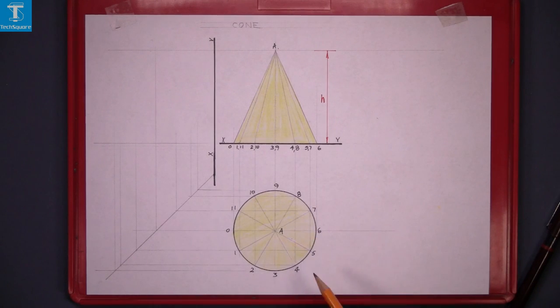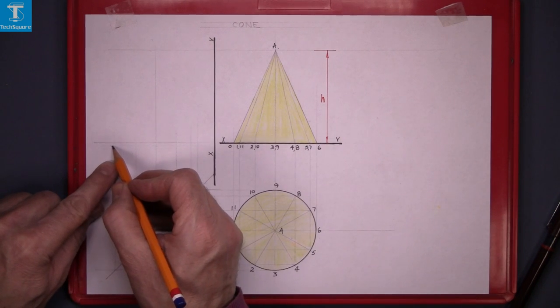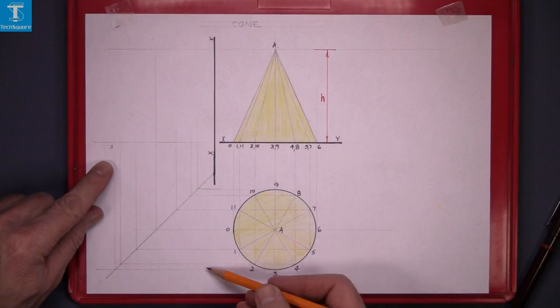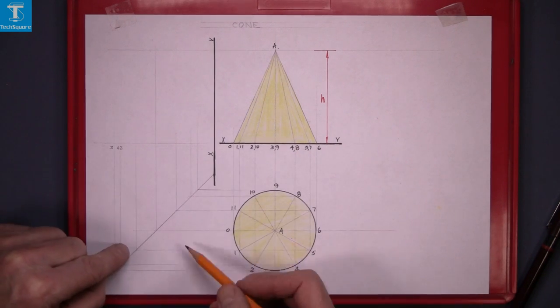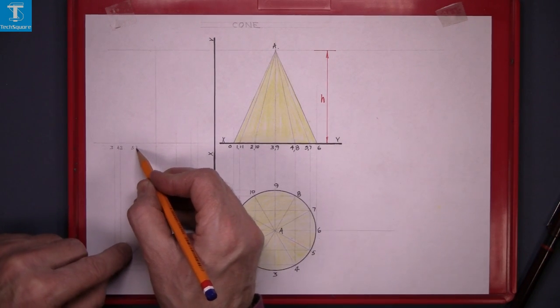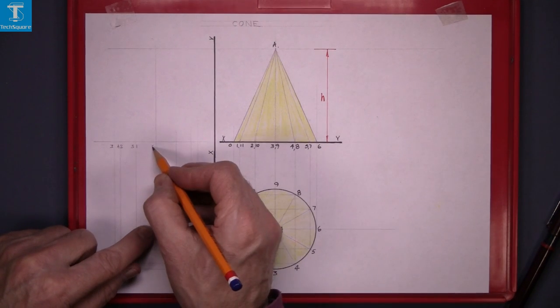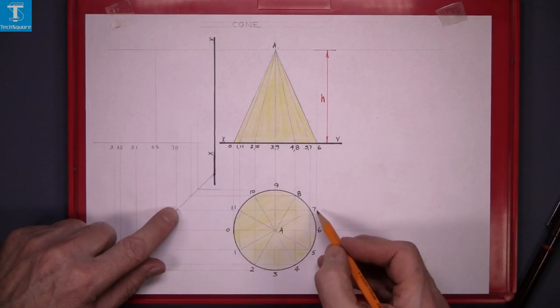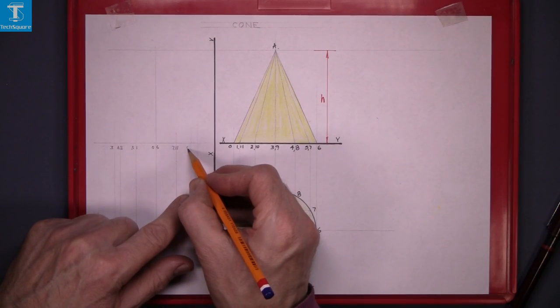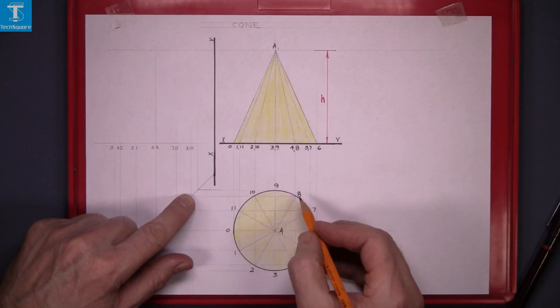So we'll take point 3 here. It's on the outside line here. So that there is point 3. 4, 2 is the next one. 5, 1 is the next one. 0, 6. 7, 11. 8, 10. And the last one 9.